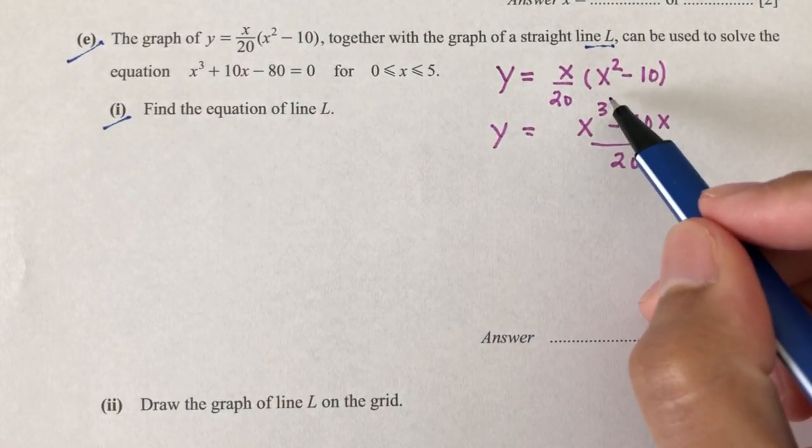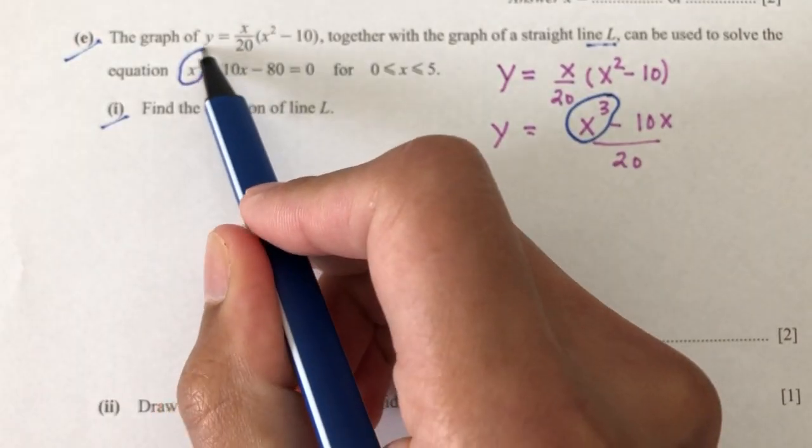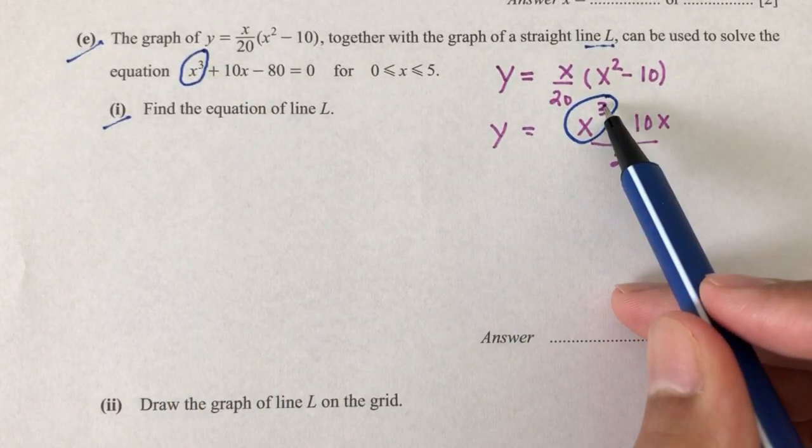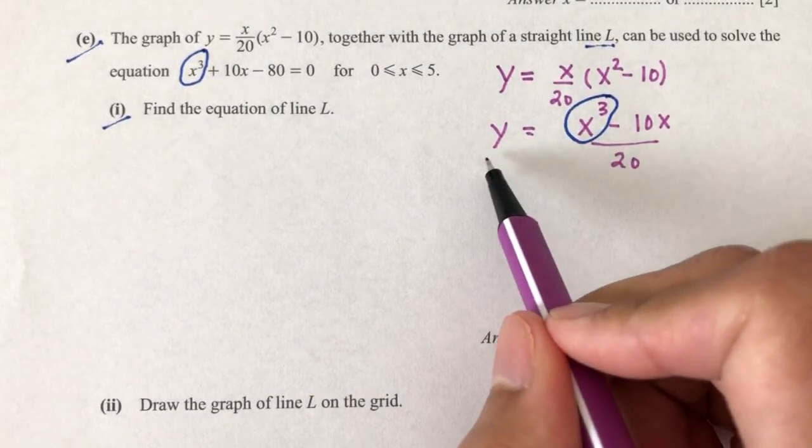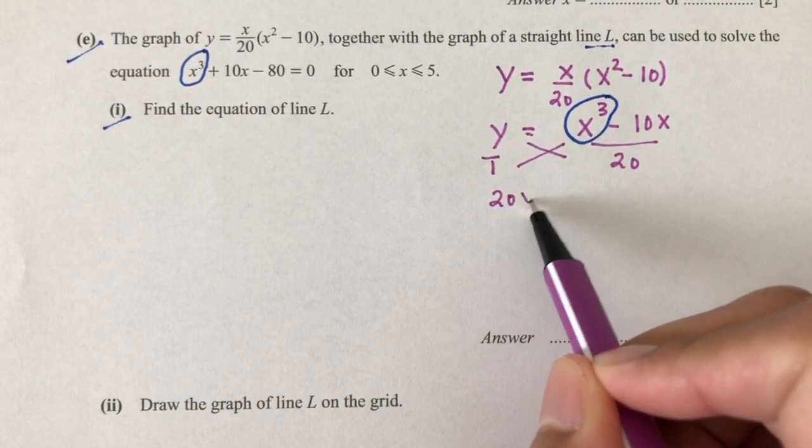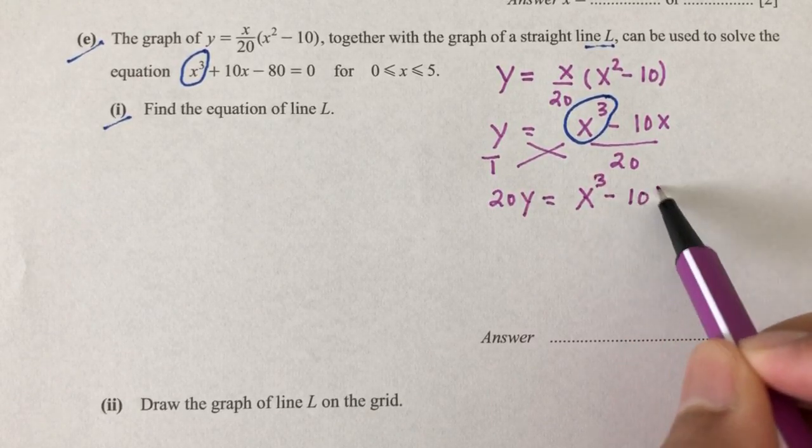Now, if you observe, you will see you have x power 3 here and x power 3 here. So we can try to make x power 3 the subject of formula. So how would you do this? You first have to cross multiply. You will have 20y is equal to x power 3 minus 10x.